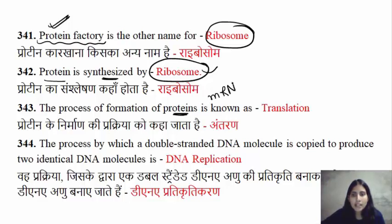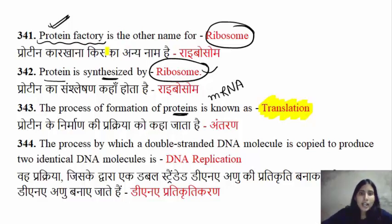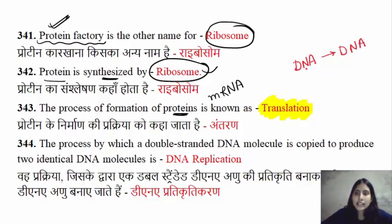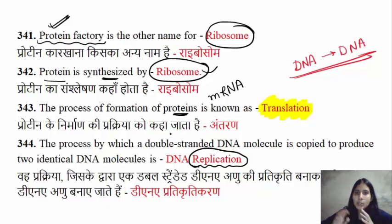The process of formation of proteins is called translation. If you have a protein being formed from mRNA, that process is translation. And the process of DNA copying itself is called DNA replication.